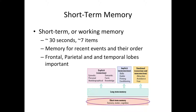For short-term memory, the temporal, parietal, and frontal cortices are really important. Short-term memory is said to be around 30 seconds and you can only hold up to around seven items.